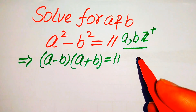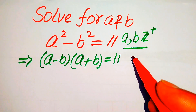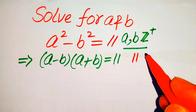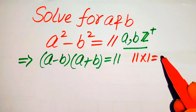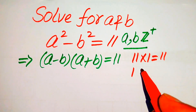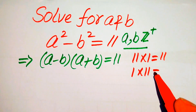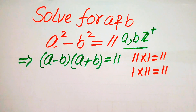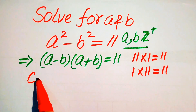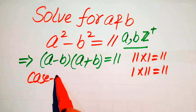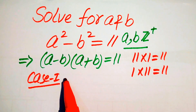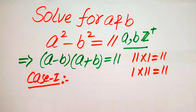The possibilities to get 11 are: 11 times 1 equals 11, and 1 times 11 equals 11. So we have these two possibilities in which the product of two numbers equals 11. We now convert our question statement into two cases.